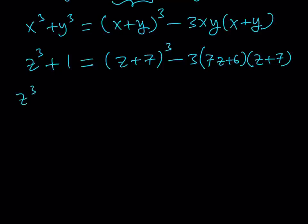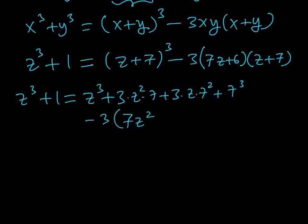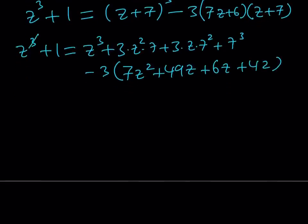Let's go ahead and solve for z. So, I'm going to expand the right-hand side. We have z plus 7 quantity cubed. From binomial theorem, we're going to get z cubed plus 3 times z squared times 7 plus 3 times z times 7 squared plus 7 cubed. And then, minus 3 times 7z plus 6 times z plus 7. Let me go ahead and distribute first. 7z squared plus 49z plus 6z plus 42. Let's simplify this a little bit. Notice that z cubed cancels out, leaving us with a quadratic equation.